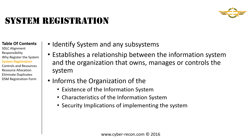When we register an information system, we identify the system and any subsystems — whether dynamic or static — that the system may contain. We establish a relationship between the information system and the organization that owns, manages, or controls it. And we inform the organization of the existence of the information system, its characteristics, and the security implications of implementing it.